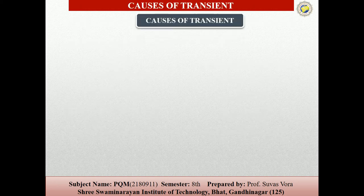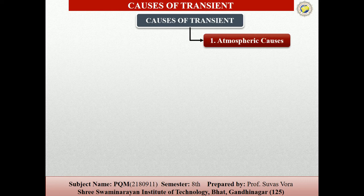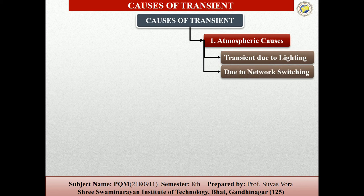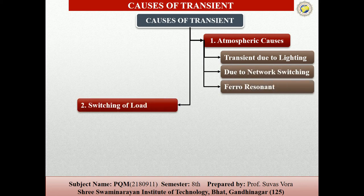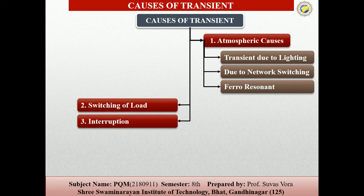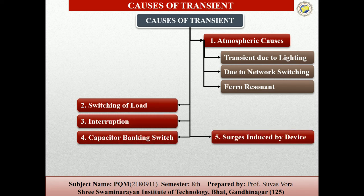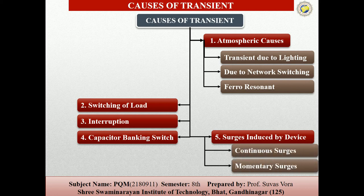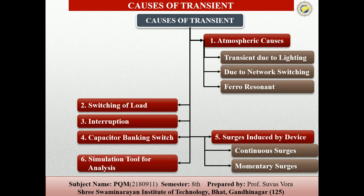The causes of the transient include atmospheric causes, which have sub-parts: transient due to lightning, then due to network switching and ferroresonance. Then switching of loads, interruptions, capacitor bank switching, and surge induced by devices, which includes continuous surge and momentary surge. The last one is simulation tools for analysis.